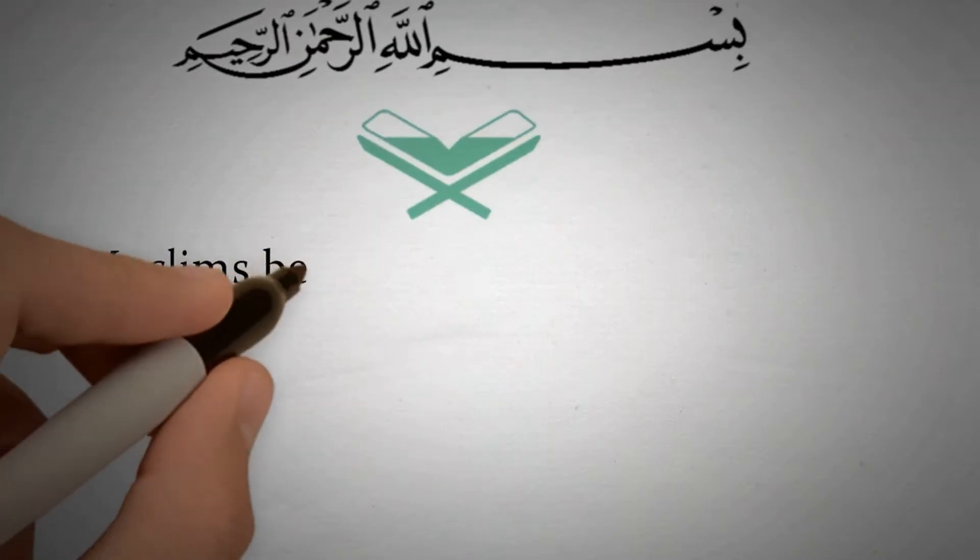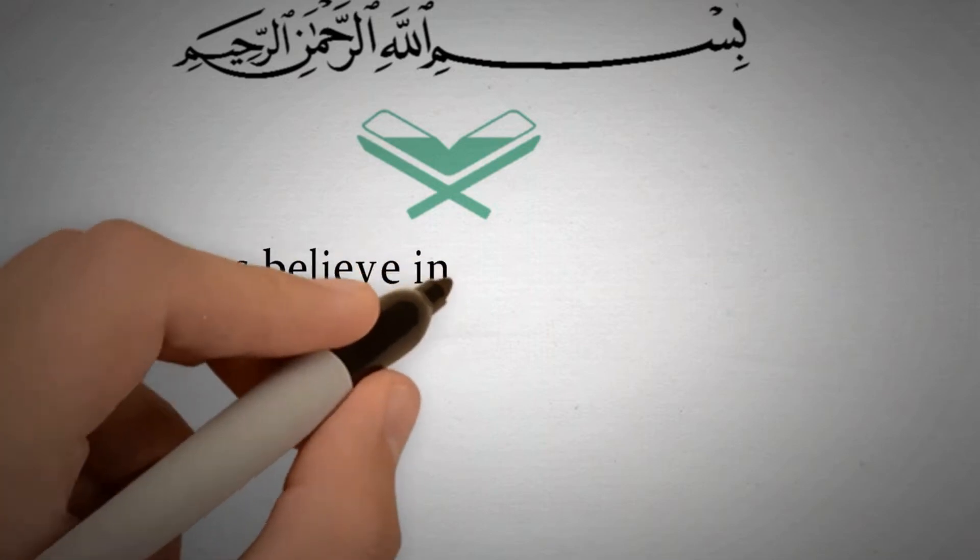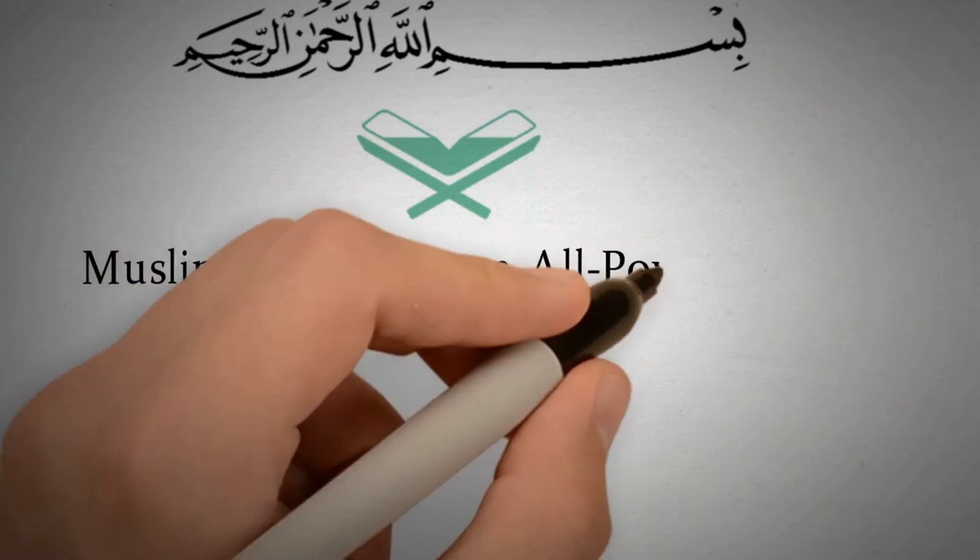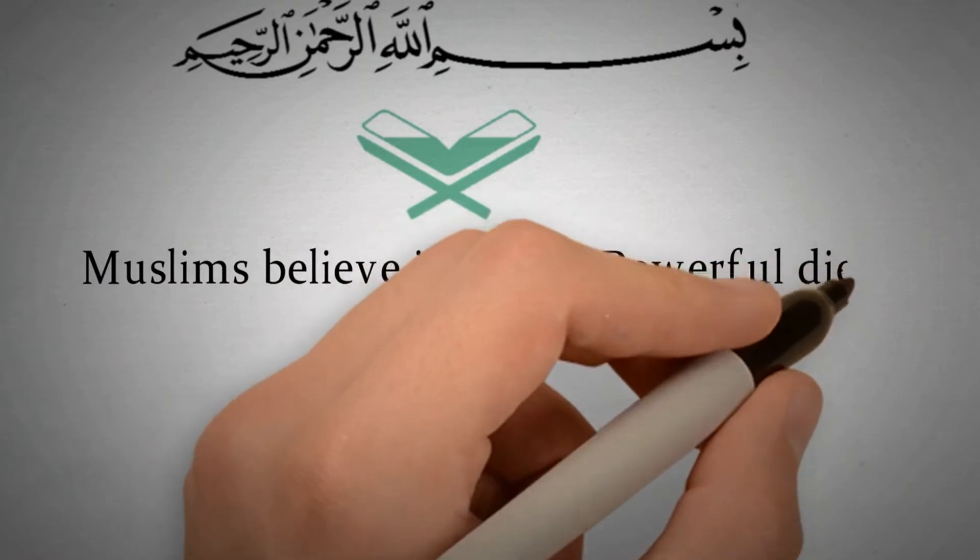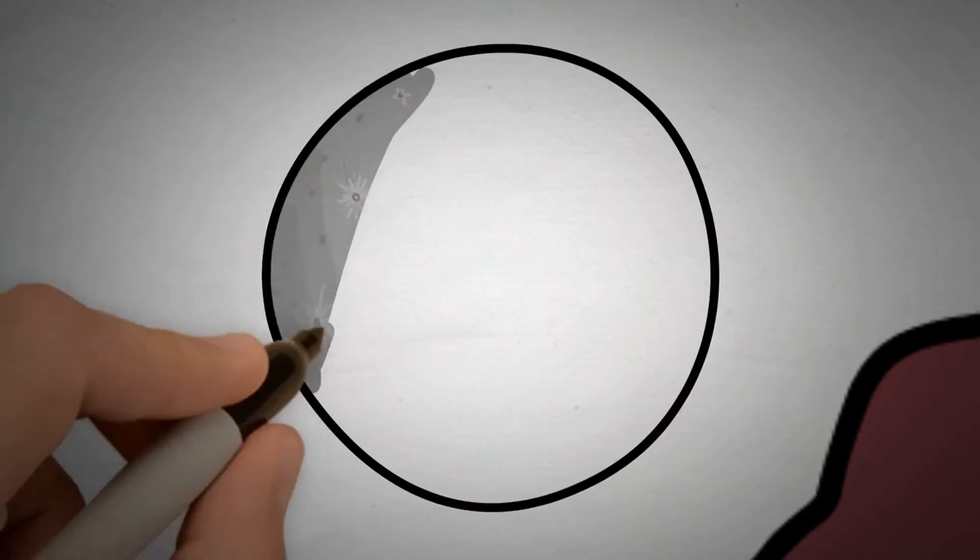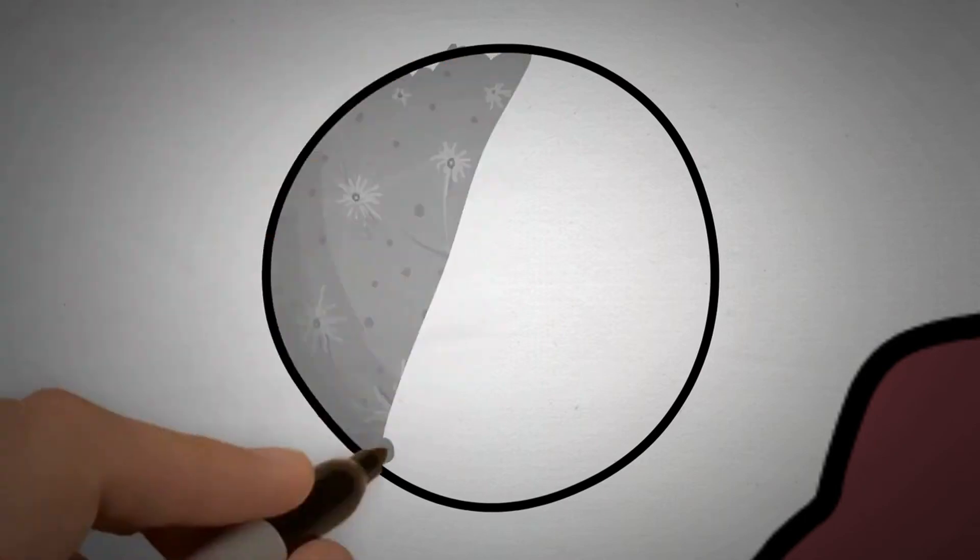Everything that happens is what Allah subhanahu wa ta'ala is doing. There is nobody who can rival him. He does not step back from certain possibilities in creation, limit himself, chain himself. That is not possible.